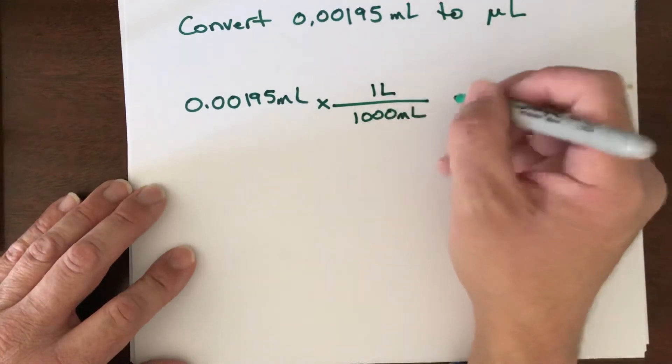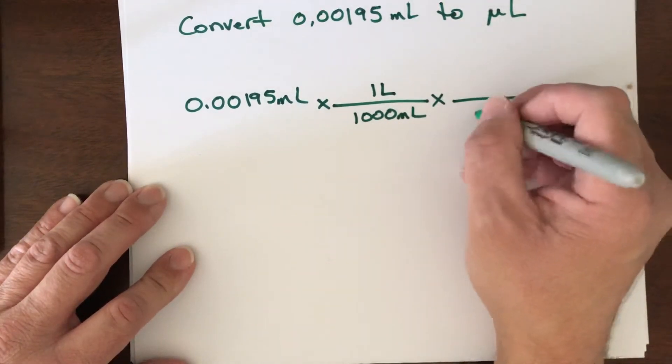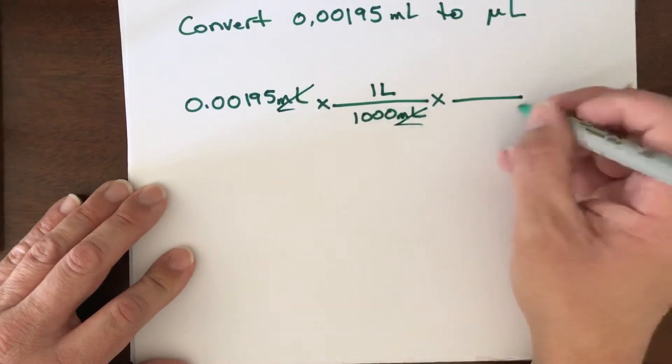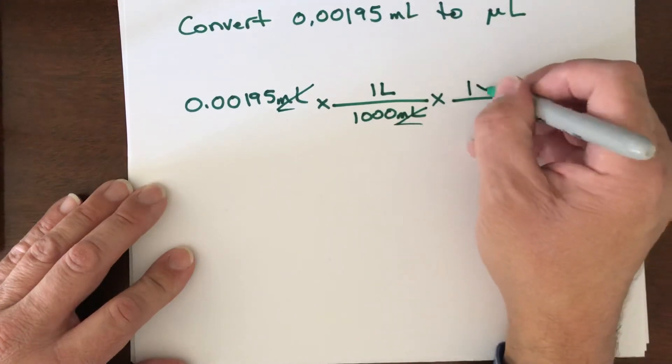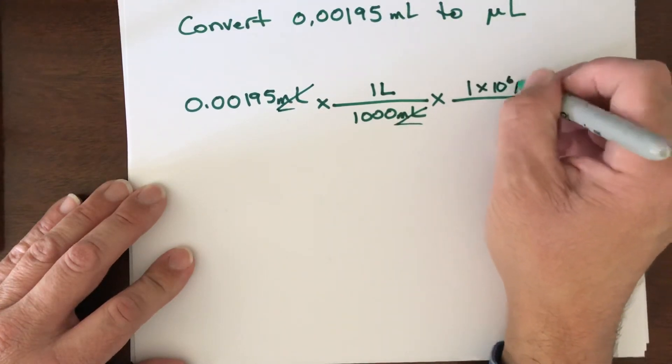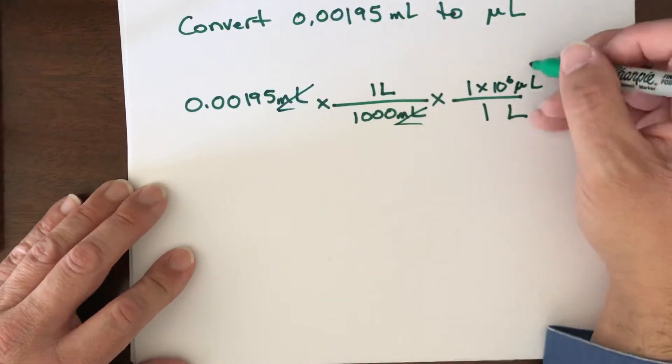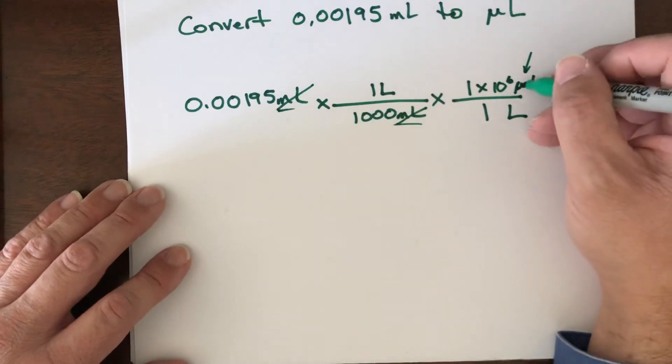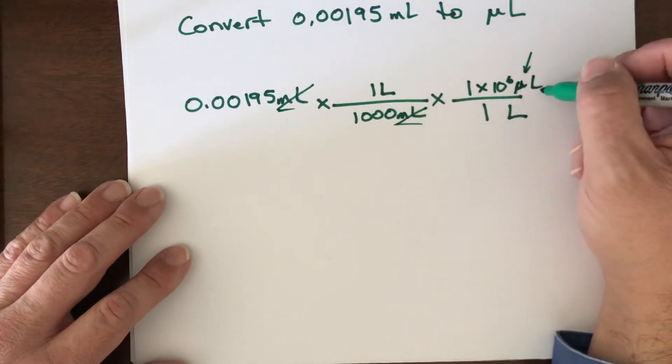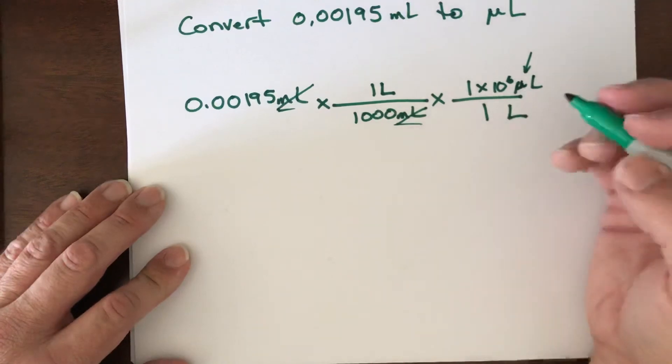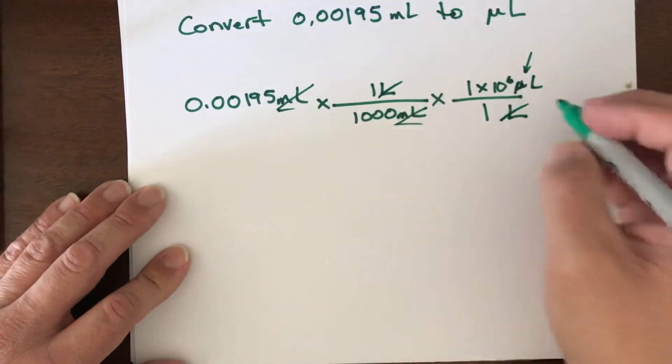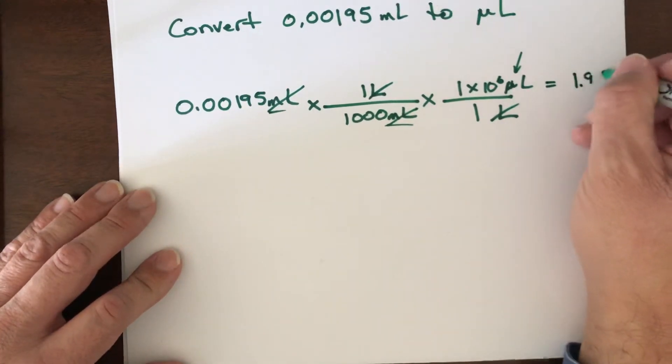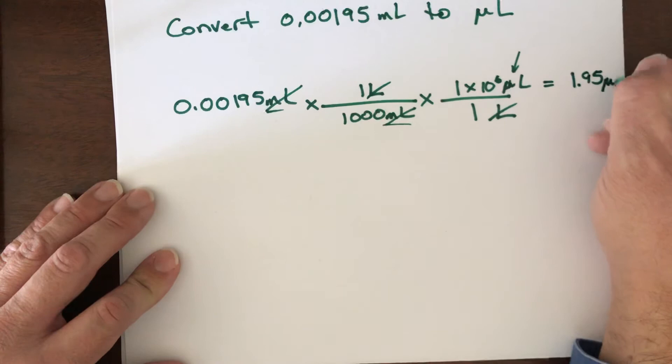So there's a thousand milliliters in one liter. I'm going back to the base unit here, and now whatever unit you have here matches the unit down in the denominator. Those cancel out. Now I'm going to put liters here and go to microliters, so there's 1×10⁶ microliters in every one liter. That micro prefix means 1×10⁶ micro-whatever is per one whatever. Liters cancel out, and now we multiply across and that's going to come out to be 1.95 microliters.